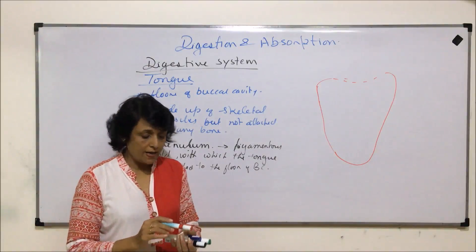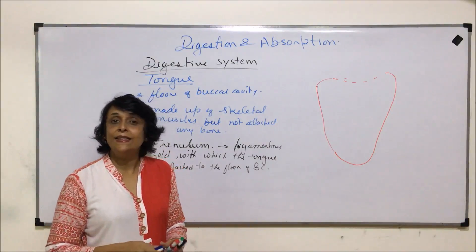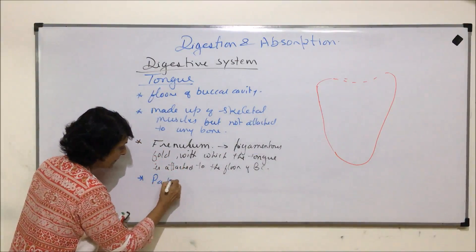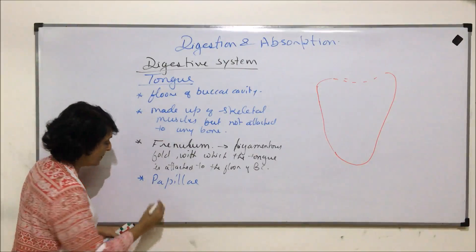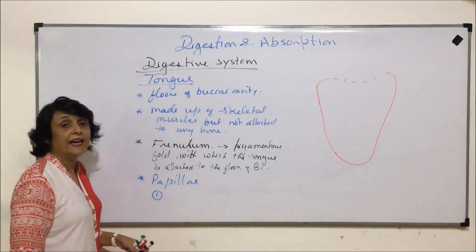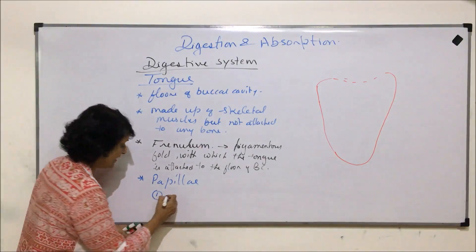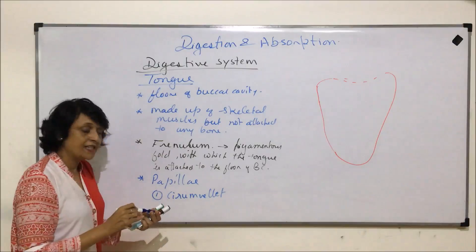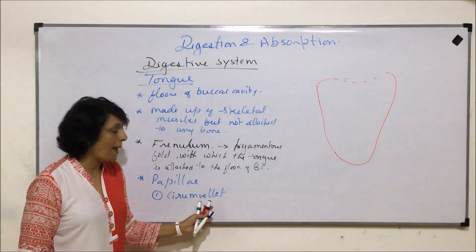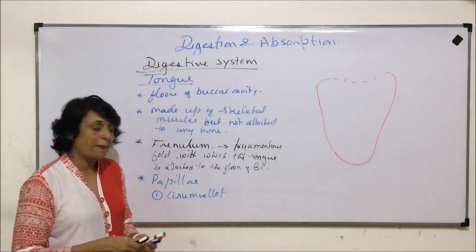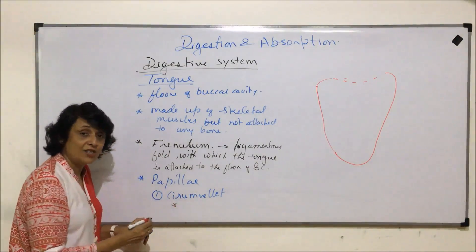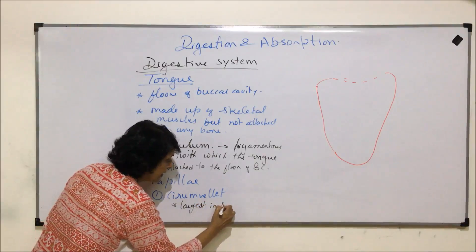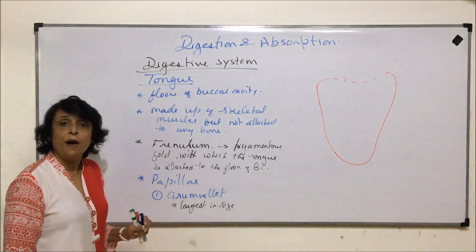On the tongue are present papillae, and these papillae are of three types. The first type is called circumvallate papillae, sometimes simply written as vallate papillae. Circumvallate papillae are largest in size but fewer in number.